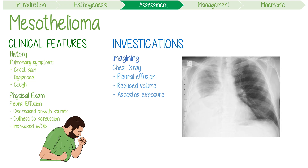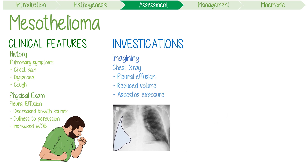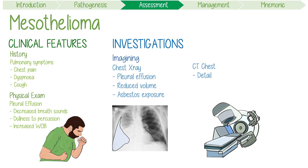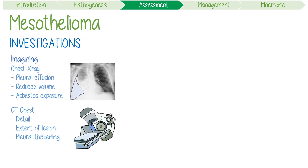This chest X-ray demonstrates opacification of the right pleural space from a malignant pleural mesothelioma. A CT chest is also necessary, which will in detail characterize the extent of the lesion and might demonstrate circumferential or nodular pleural thickening.